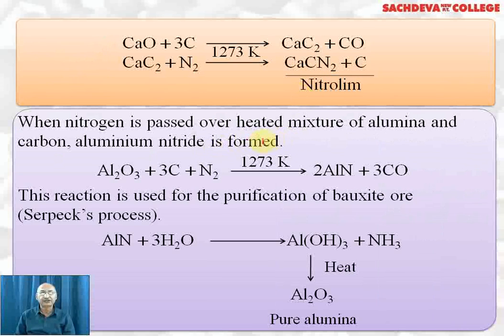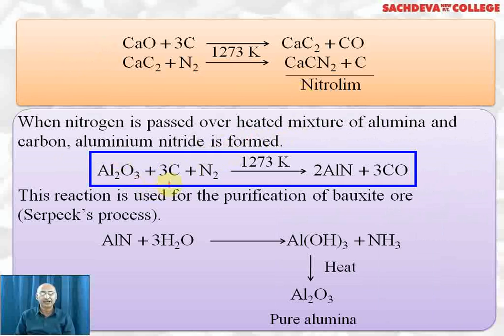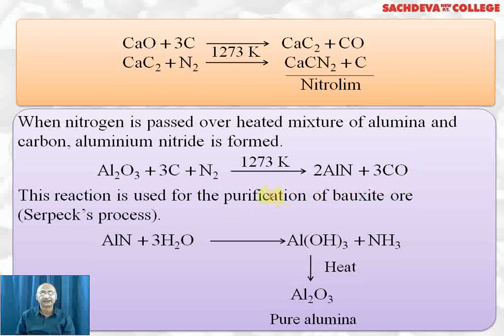When nitrogen is passed over a heated mixture of alumina and carbon, aluminium nitride is formed: Al₂O₃ + 3C in the presence of nitrogen at 1273 Kelvin gives aluminium nitride plus carbon monoxide.